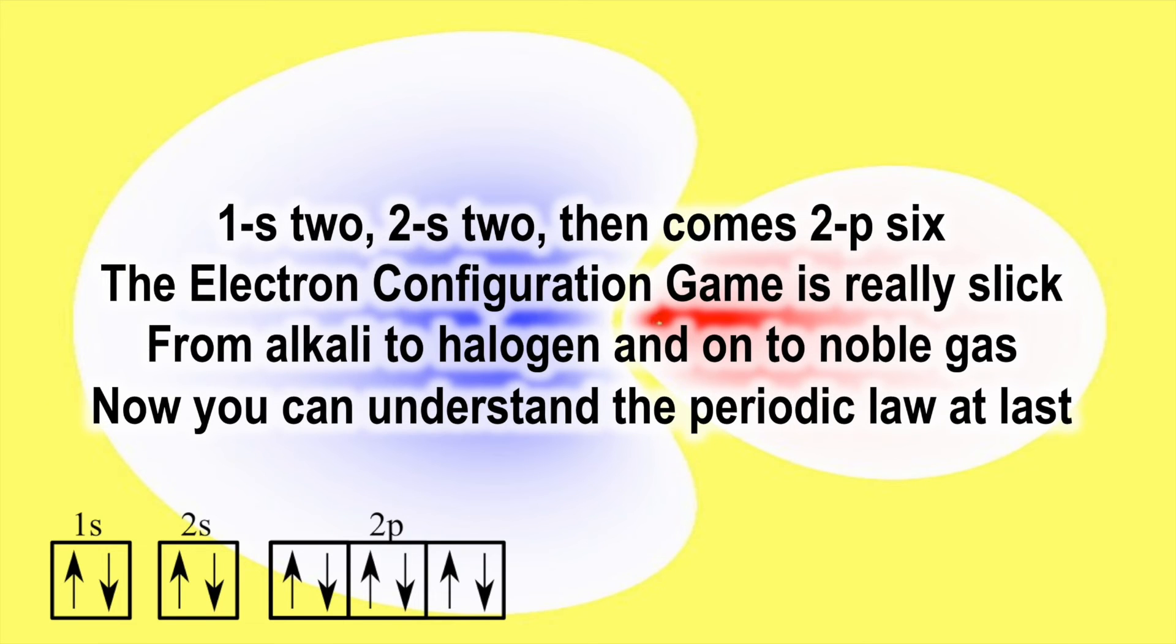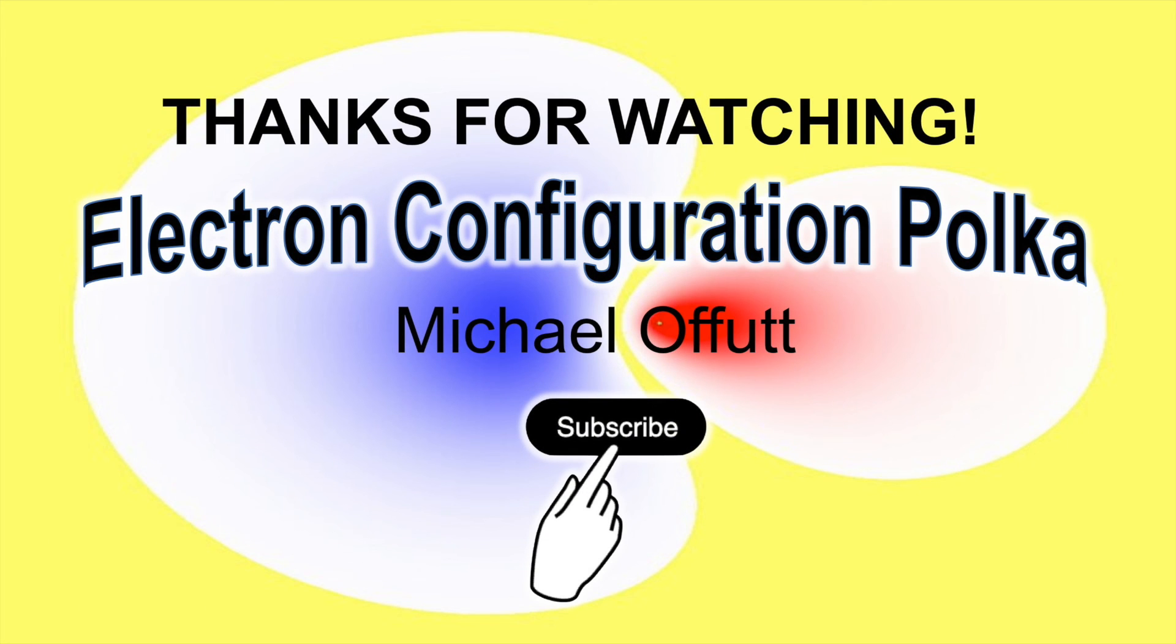Then 1s two, and 2s two, and then comes 2p six. The electron configuration game is really slick. From alkali to halogen and on to noble gas, now you can understand the periodic law at last.